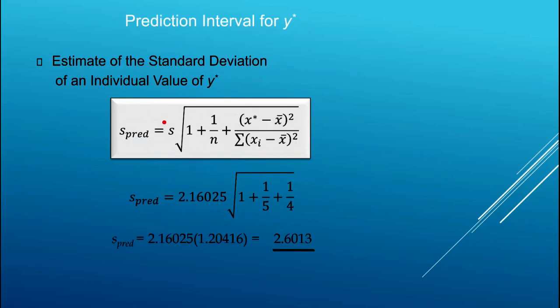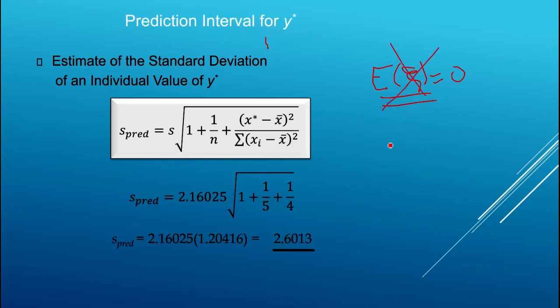Now let's talk about a prediction interval. Rather than forecasting the average number of cars sold when running three ads, let's think about a specific sale next week. We're going to run three TV ads this weekend — how many cars will we sell? This is a different question because it's one specific sale we're forecasting. We can no longer assume the expected value of e equals zero, since we're not dealing with averages; we must account for variation introduced by the error term.